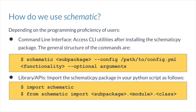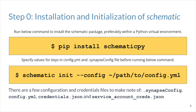Depending on the level of proficiency of users, Schematic provides a couple of ways in which users can leverage its functionalities. Biologists with some exposure to using the command line can use Schematic's command line interface or CLI to interact with the tool, while other more seasoned programmers can use it as a Python library. Currently, the only data repository supported by Schematic is Synapse, so all of its utilities are built considering Synapse is where the user wants to store their datasets. The Schematic tool is distributed as a Python package, so the installation process is running a simple pip install.